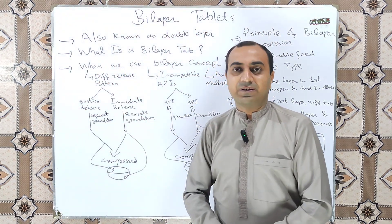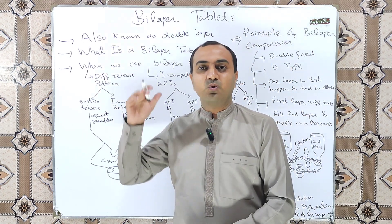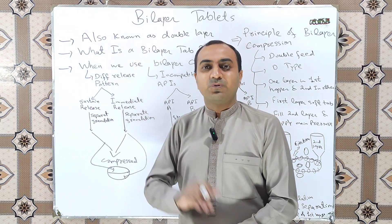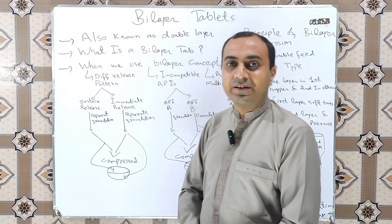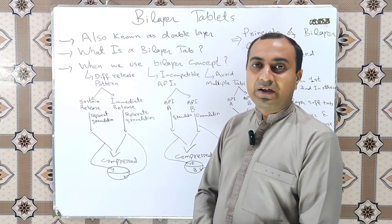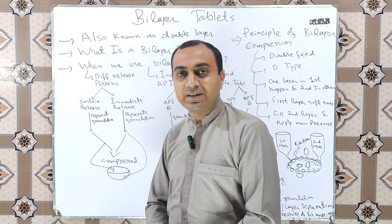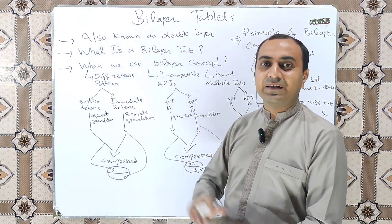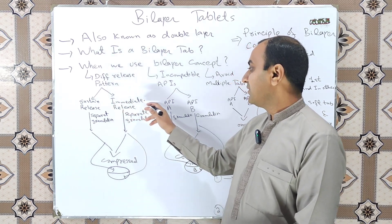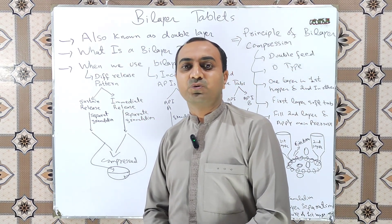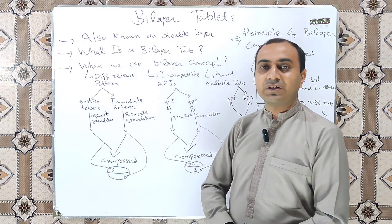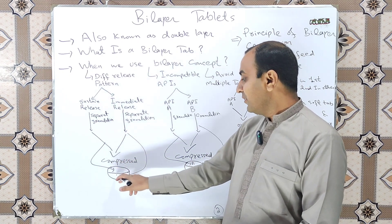For different release patterns — suppose we want to get two different release patterns in a single tablet, meaning we want two active pharmaceutical ingredients where one gives a sustained release effect and the other gives an immediate release effect. For this, we manufacture them in different layers: for API A we use a separate granulation method, for API B we use a separate granulation method — either wet granulation, dry granulation, or direct compression — and then combine them by the layer concept into a single tablet.